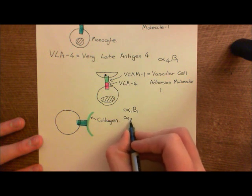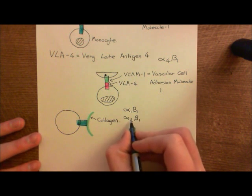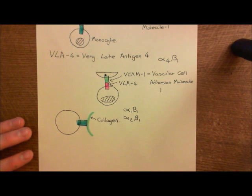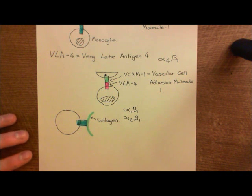Another example is alpha 2 beta 1. Again, you just change the alpha subunit to the alpha 2 subunit, and leave the beta subunit as the beta 1 subunit, and again, you get an integrin which is capable of binding to collagen.